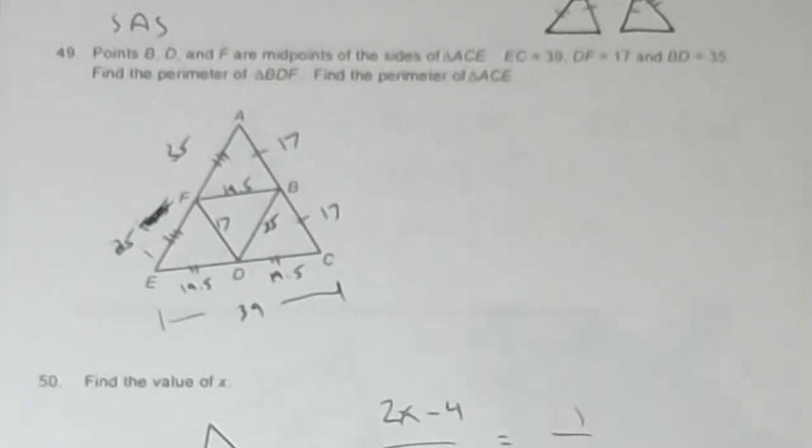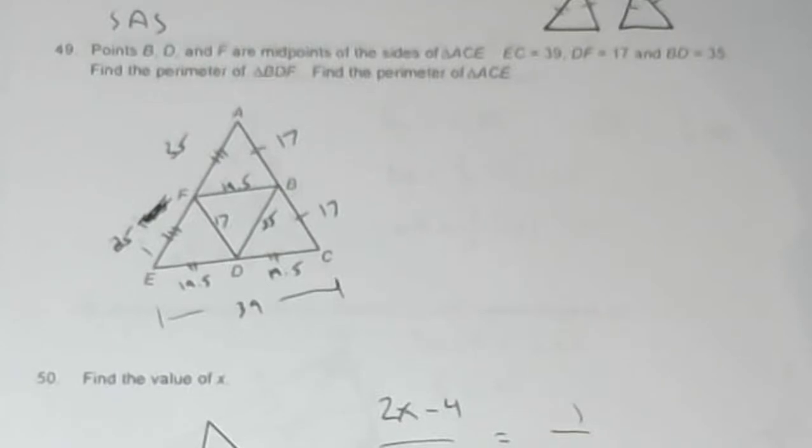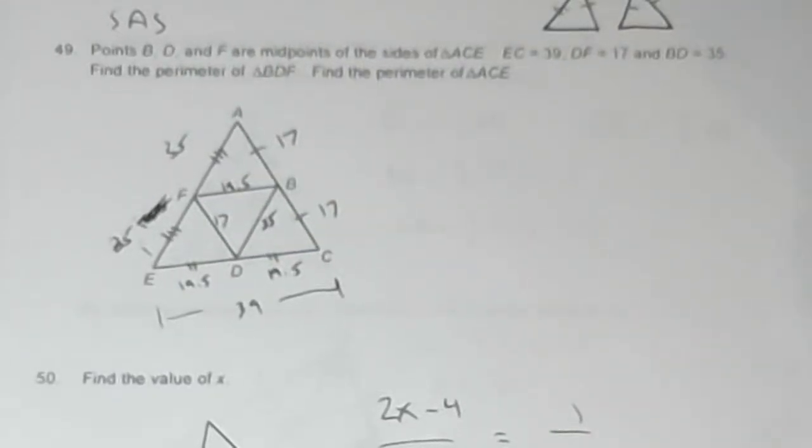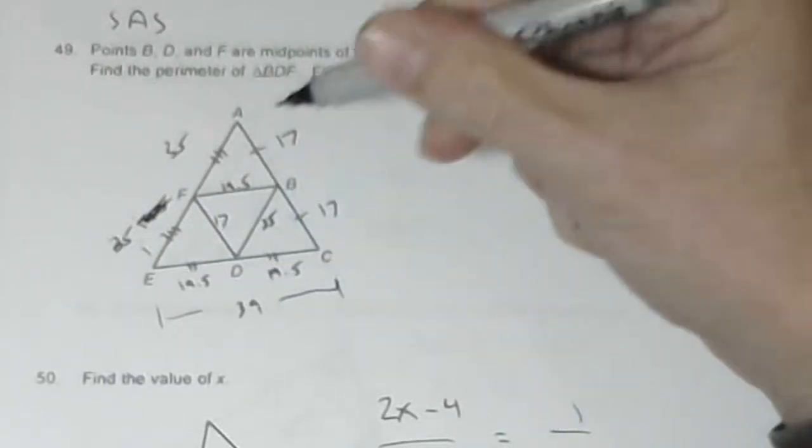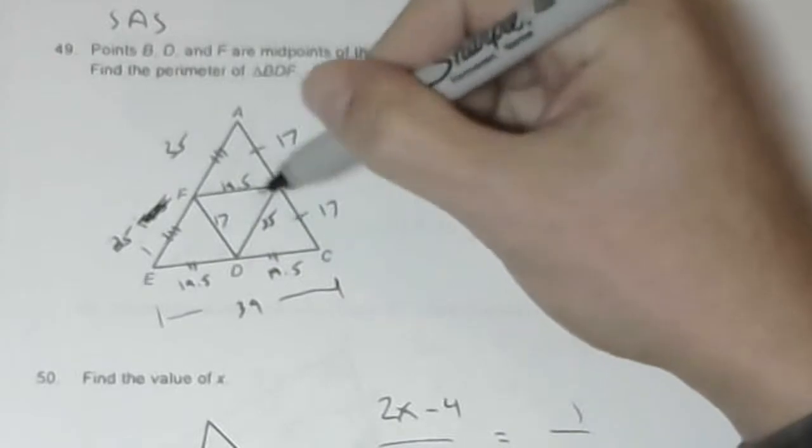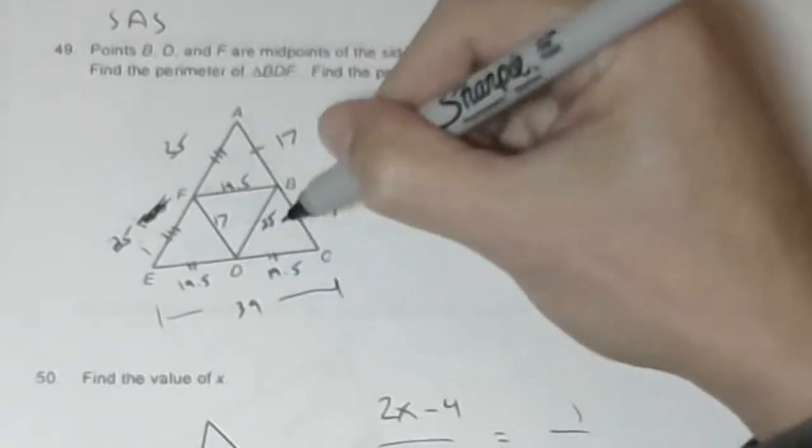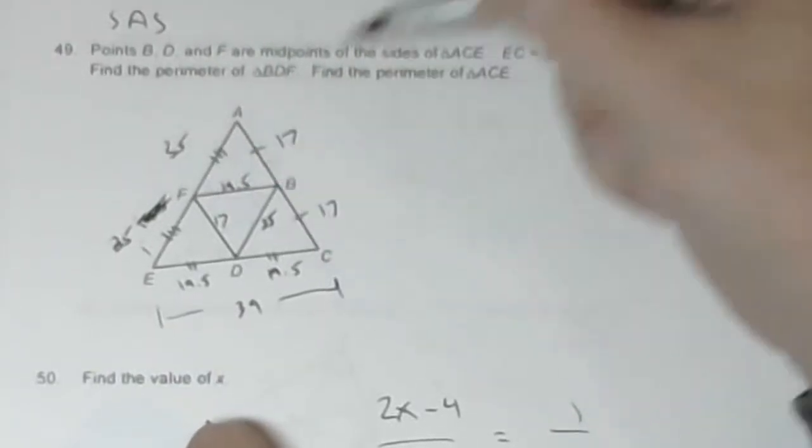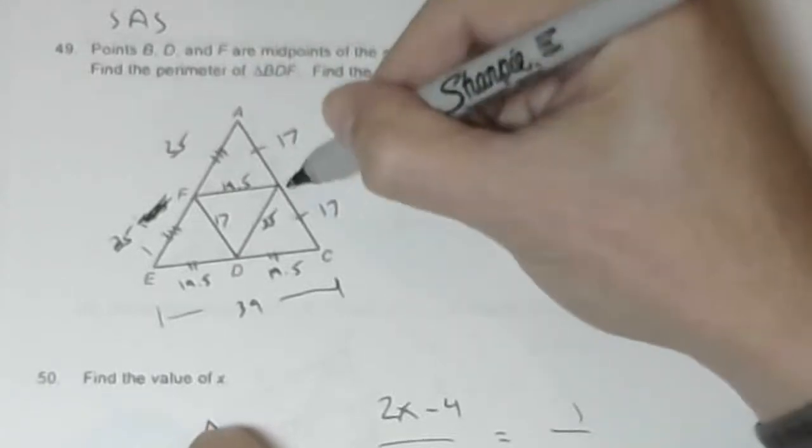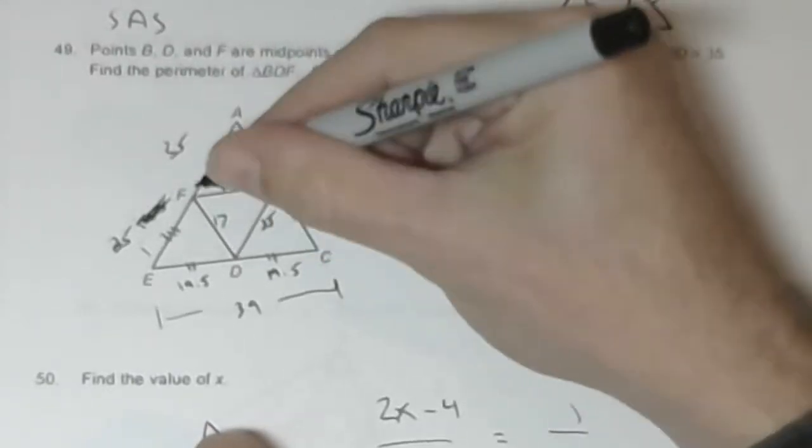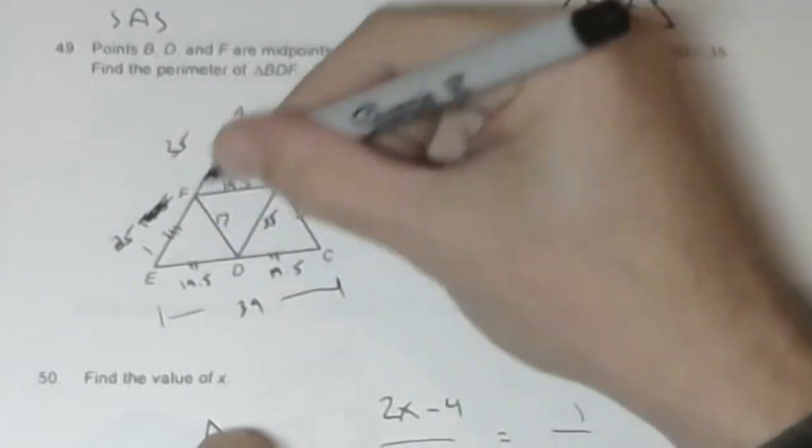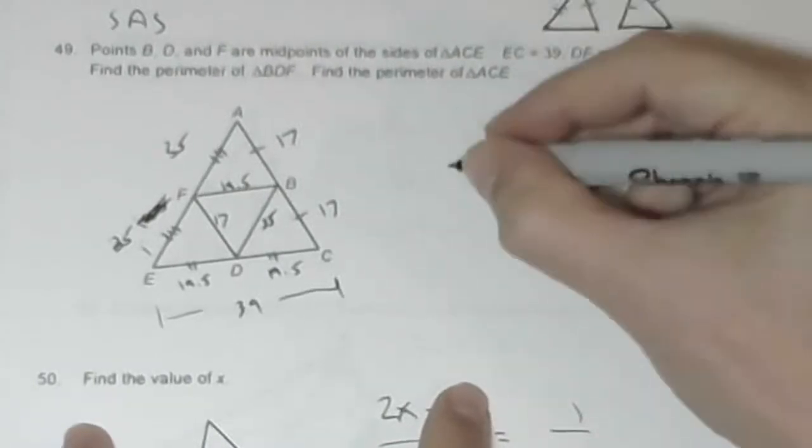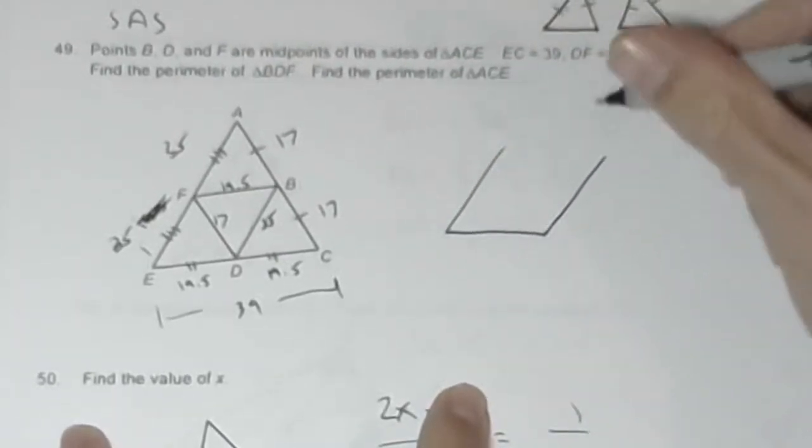Problem 49. Points B, D, and F are midpoints of the sides of triangle ACE. EC is 39. Because these are the midpoints, D is the midpoint of EC, so ED is equal to DC, and those are each half of 39, which is 19.5. DF is 17, BD is 35. Find the perimeter of triangle BDF and the large triangle. What I get are parallelograms.